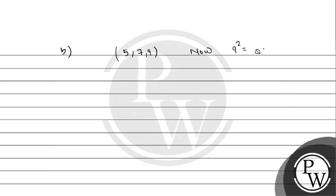How much is 9 squared? It is 81. And 5 squared plus 7 squared: 5 squared is 25, 7 squared is 49, and 25 plus 49 is 74, which is not equal to 81. So option B will not be a Pythagorean triplet.